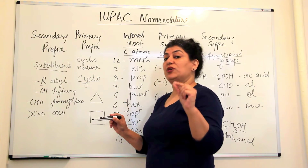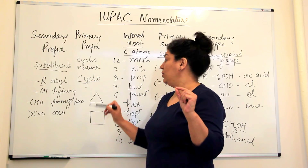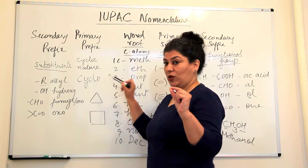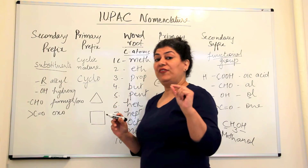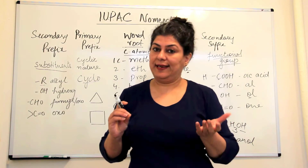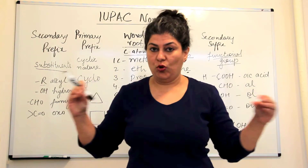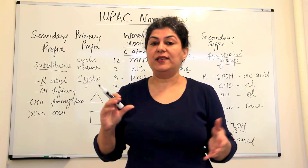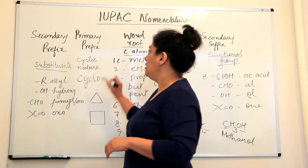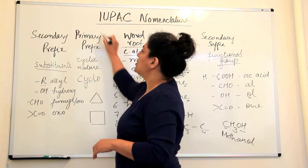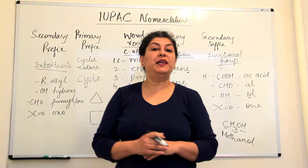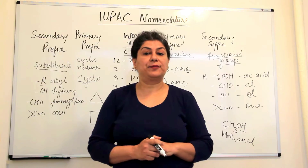If the compound is cyclic, we use the prefix 'cyclo.' But if the compound is non-cyclic — an open chain or branched chain with no ring — then we skip or drop the primary prefix entirely.